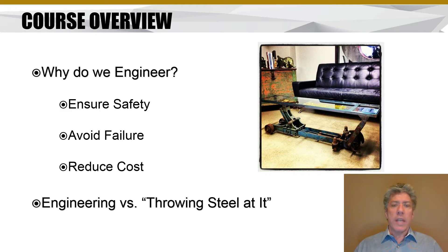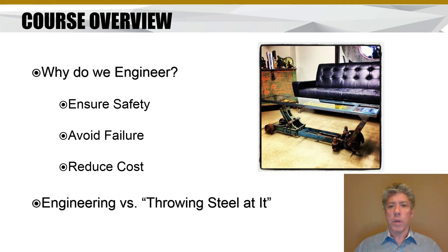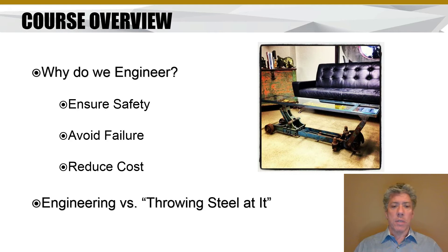Why do we engineer things? We want to make sure they're safe. You can make almost anything safe by throwing more material at it — you could make a drive shaft out of butter if you had enough butter — but that's not practical. So we engineer things to make them work, ensure safety, avoid failure, and reduce costs. Adding material isn't always a solution; if you add too much to a plane, it doesn't get off the ground.